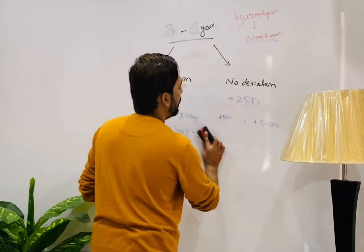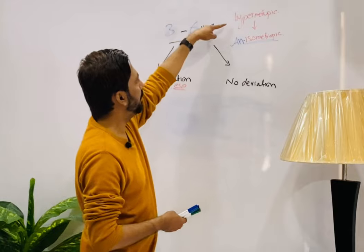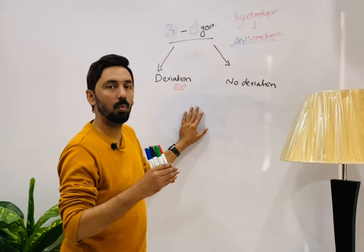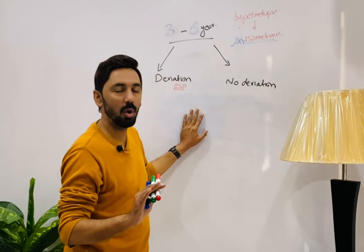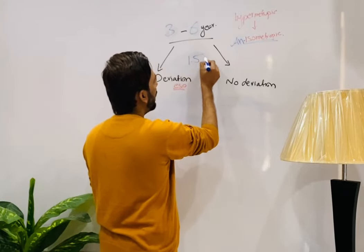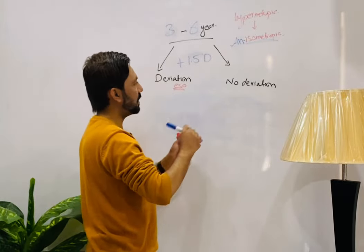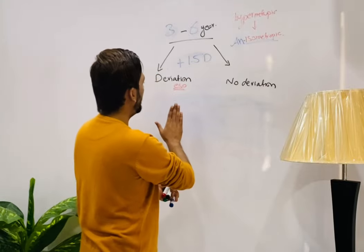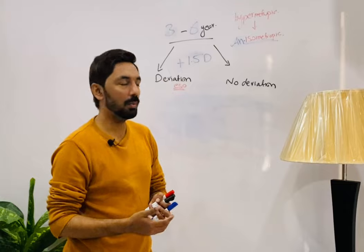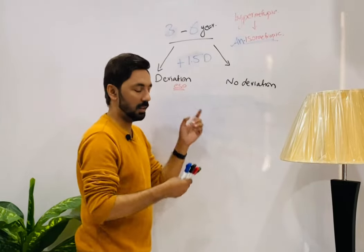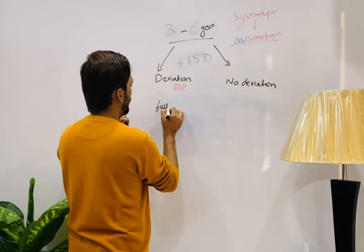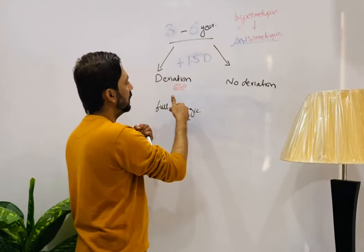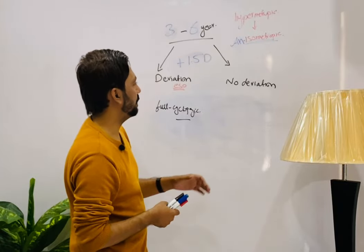Now for anisometropic hypermetropia in the three-to-six years age group: if anisometropia is up to 1.5 diopters or less, we will not prescribe any glasses. But if anisometropia is more than 1.5 diopters with deviation — and esotropia is present — we will prescribe full cycloplegic correction.